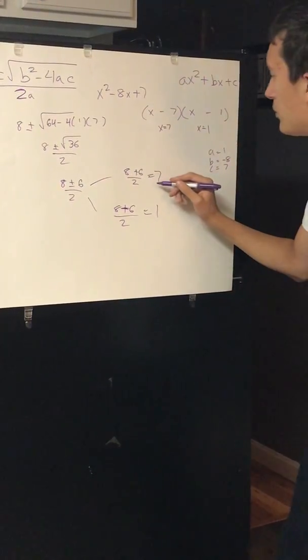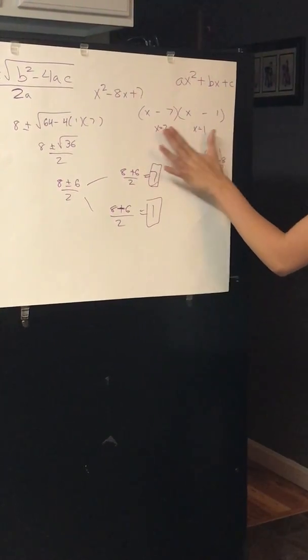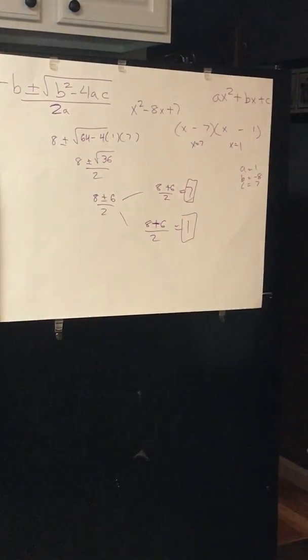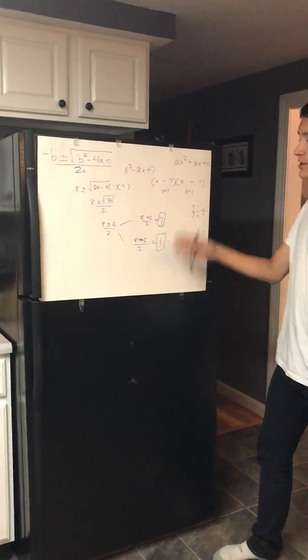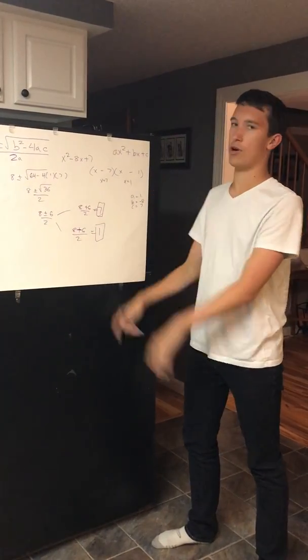So now you have proven that you've got 7 and 1 for your factoring and 7 and 1 for your quadratic formula, so your x variable can either be 7 or 1. My name is Parker Cannon, and this is how you do factoring and quadratic formula.